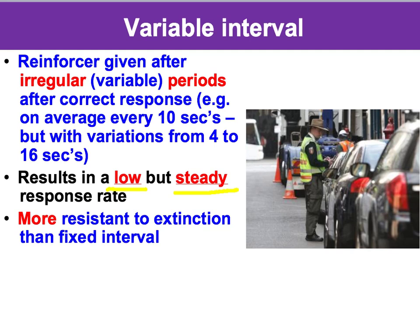Variable interval is more resistant to extinction than fixed interval. For example, if we're in a pocket of Port Phillip Bay and there's no fish in that area, how do we know? We might think we've just been unlucky. We've spent eight hours in the same spot trying to catch a fish, and we think they're probably all circling around and eventually we'll get one.